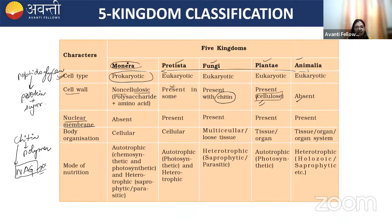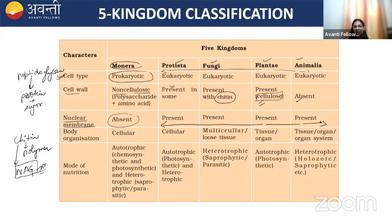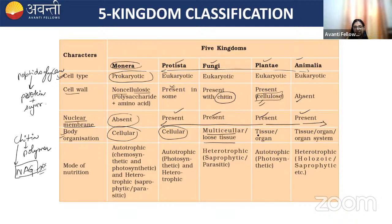Body organization across the five kingdoms: Monera are unicellular prokaryotes — cellular organization. Protista are unicellular eukaryotes — also cellular. Fungi are multicellular with loose tissue organization. Plantae have tissues and organs. Animalia have tissues, organs, and organ systems. These represent the body organization of the five kingdoms.